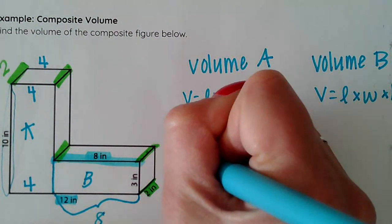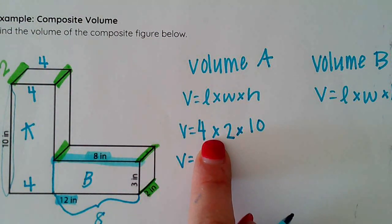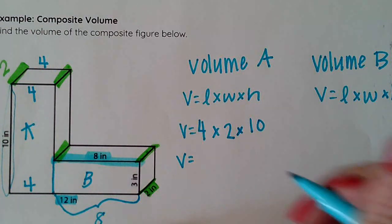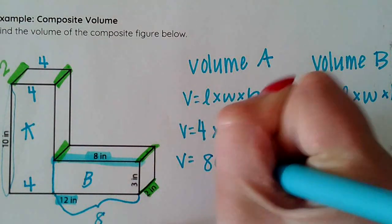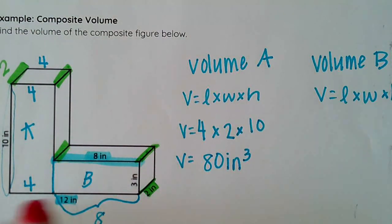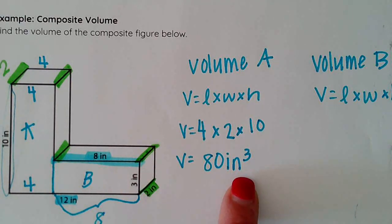Now I could go ahead and multiply that all together. Four times two is eight times 10 is 80 inches cubed. So this one part of my composite figure, that rectangular prism is 80 inches cubed.